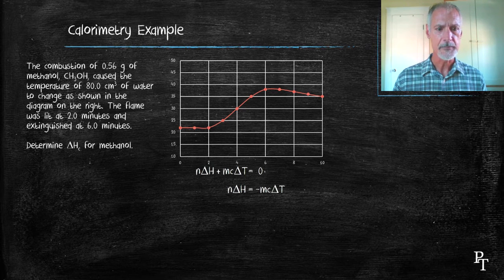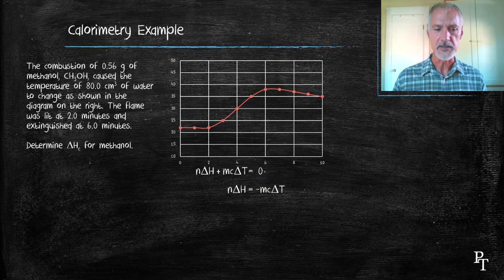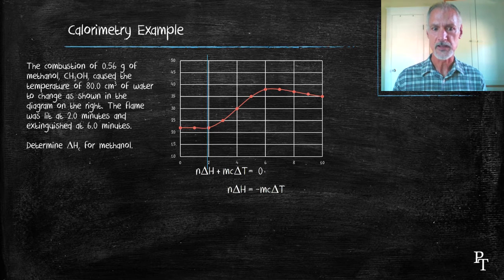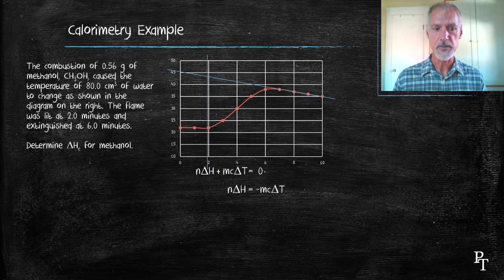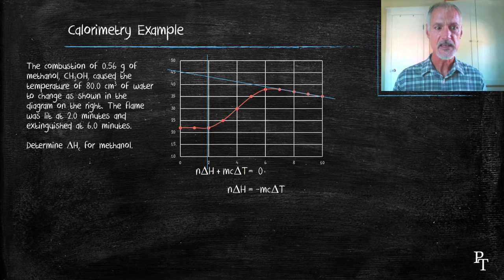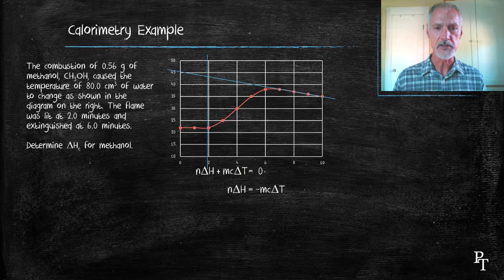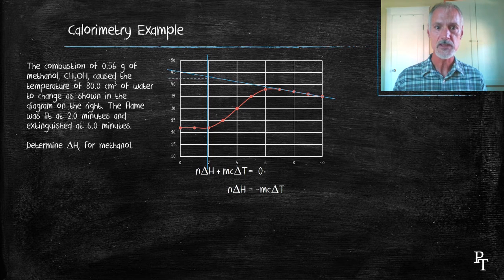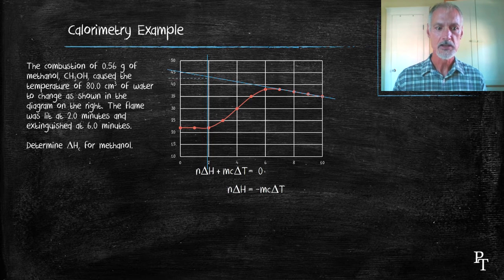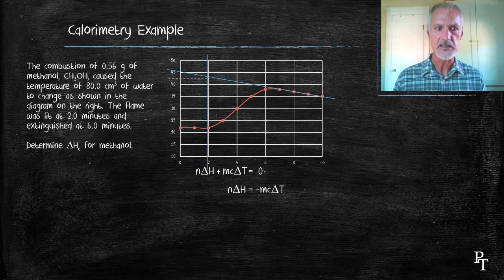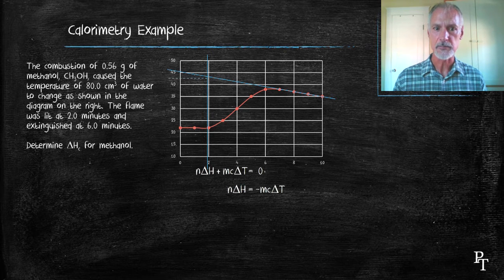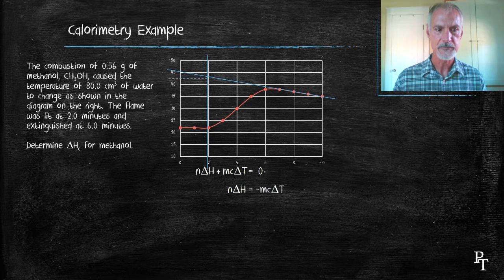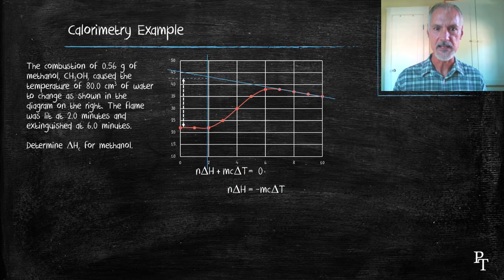But I can do better than that. If I go to the point at which I ignited the flame, which is the two-minute mark, and if I go to the cooling portion of my curve from six minutes to ten minutes and draw a line of best fit through those points, they intersect at about 43 degrees. This is a better indication of my temperature change because it takes into account heat losses that would occur during the four minutes that it was being heated. I'm going to use 43 then as my final temperature, instead of the 38 that I might read off the graph.